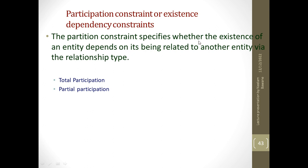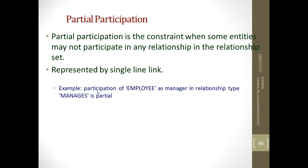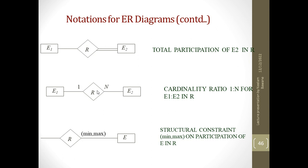Participation constraints specify whether the existence of an entity depends on its being related to another entity via the relationship type. There is total participation and partial participation. Total participation means every entity must get involved in some relationship — for example, every employee must work in some department or on some project. Partial participation means not all entities get involved — for example, not all employees will be managers. Total participation is indicated with two lines and partial participation with a single line.